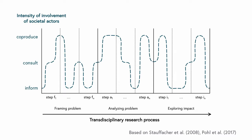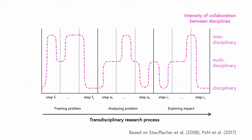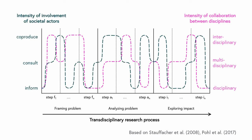Depending on the step, it might be adequate to inform them, to consult them, or to closely collaborate and co-produce knowledge. At the same time, the intensity of collaboration between the different disciplines — shown in pink here — can vary. So, the form and intensity of involvement of societal actors and the collaboration between the disciplines vary while the project is progressing.